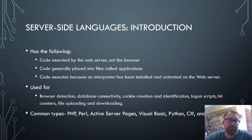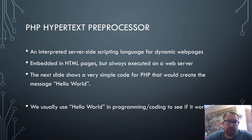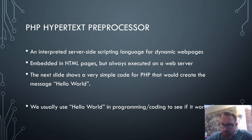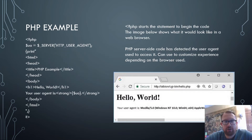The common types of server-side languages we'll cover are PHP, Perl, Active Server Pages, Visual Basic, Python, C Sharp, and Java. The first is PHP — PHP Hypertext Pre-Processor — an integrated server-side scripting language used for dynamic web pages. It's embedded in HTML pages but is always executed on a web server. On the next slide, we'll see the code for PHP that would create the message 'Hello World,' which is typically used to test whether code actually works.